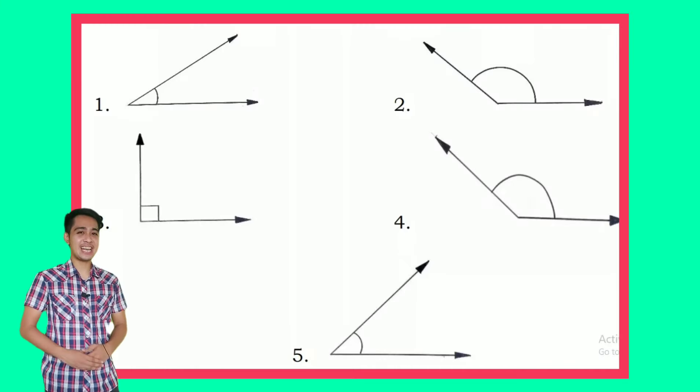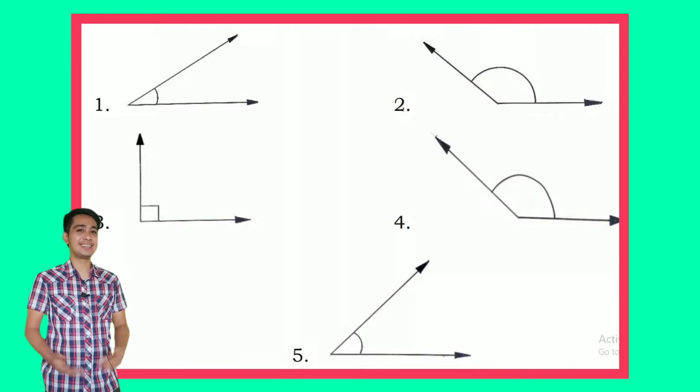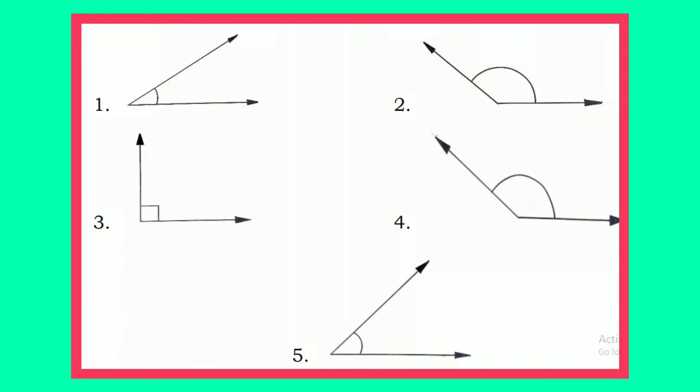Let's have an activity. You're going to classify each angle. Classify each kind of angle whether it is acute, right, or obtuse. Number one. Very good. It's an acute angle.